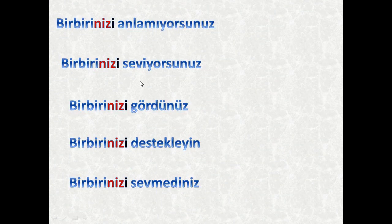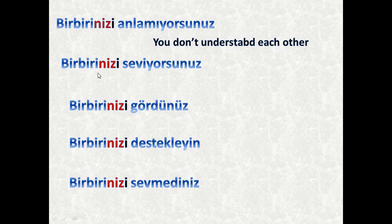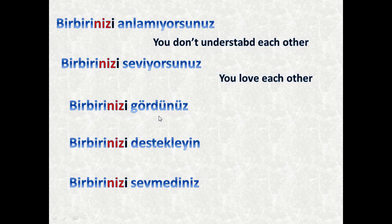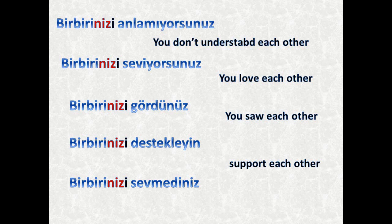Now we have the same examples with the 'nizi' form — the concept of 'you' using 'each other.' Birbirinizi anlamıyorsunuz means you don't understand each other. Birbirinizi seviyorsunuz — you love each other. You can also practice with the negative form. Birbirinizi gördünüz — you saw each other. Birbirinizi destekleyin — support each other, which is an imperative form. Birbirinizi sevmediniz — you didn't love each other.